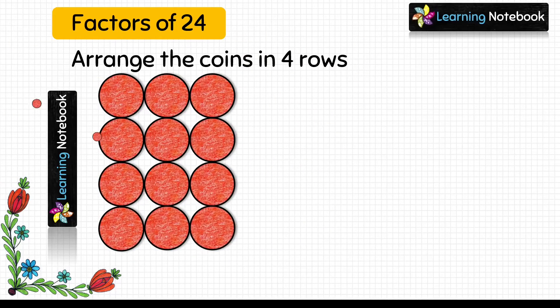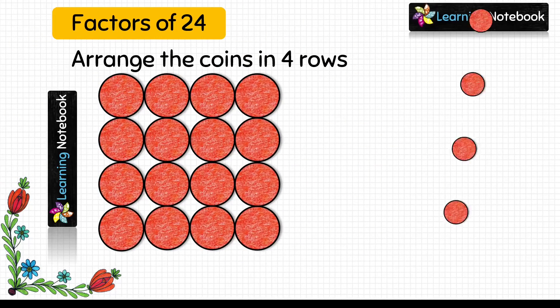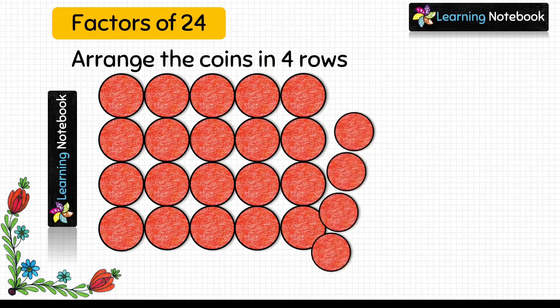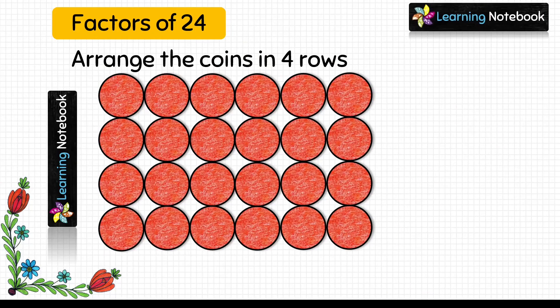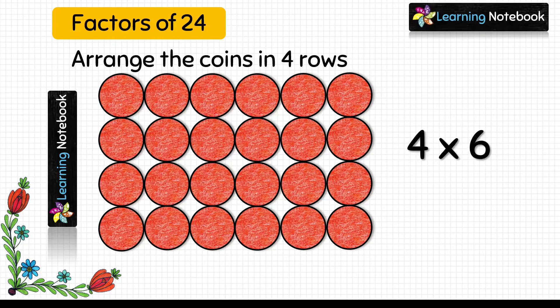Then we will arrange these 24 coins in four rows — so each row has got 6 coins. And we can write this arrangement as 4 into 6.